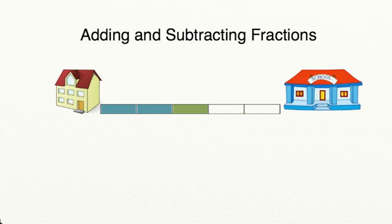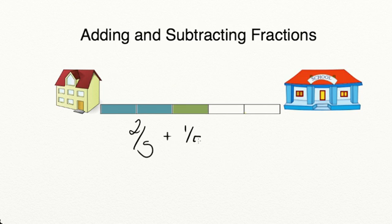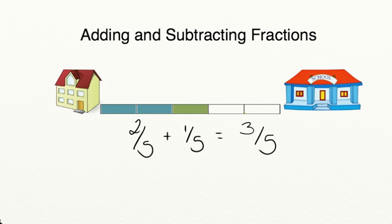We're going to start by adding a fraction with a like denominator. We know that Sam made it two fifths of the way to school and then he made it another one fifth of the way to school. So how many fifths has he made it so far? We know we only have five fifths in all and he's made it one, two, three fifths of the way. So Sam has gone three fifths of the way to school.